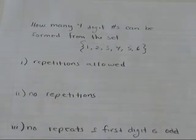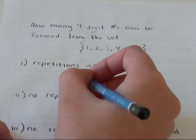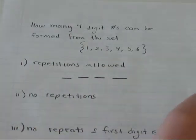In the first case, repetitions are allowed. I'm making a four-digit number, so I'm going to draw out four blank spots to put my numbers.